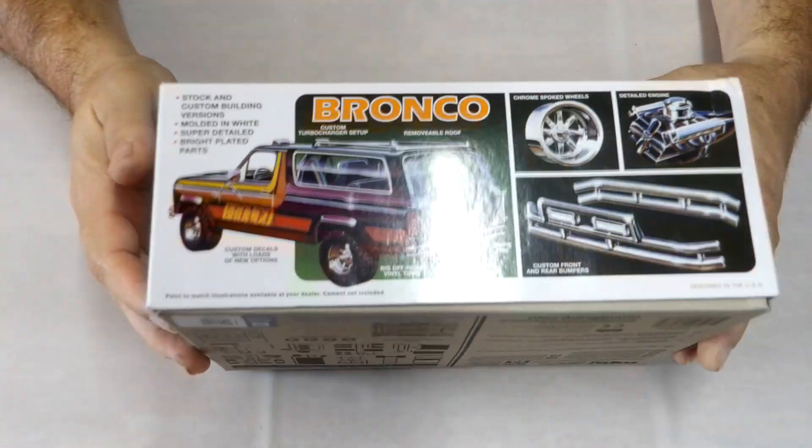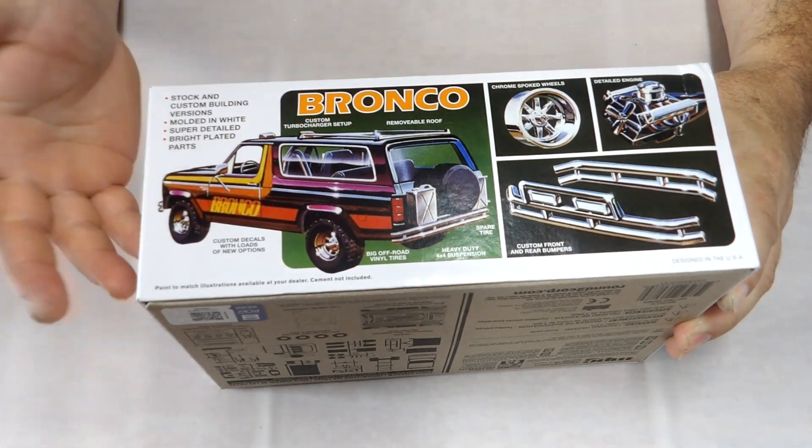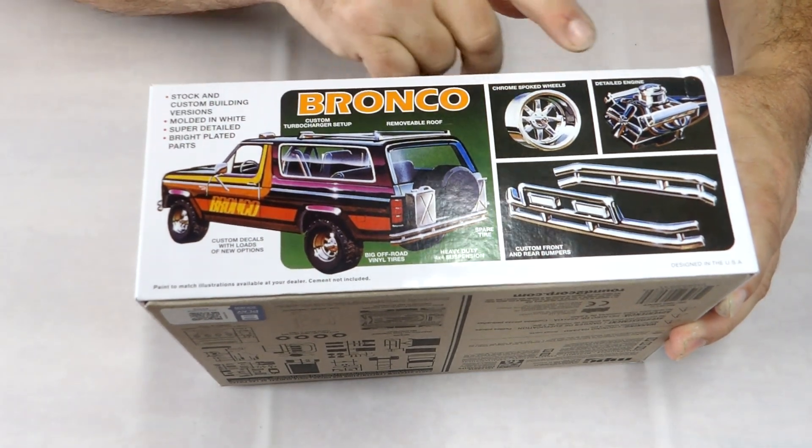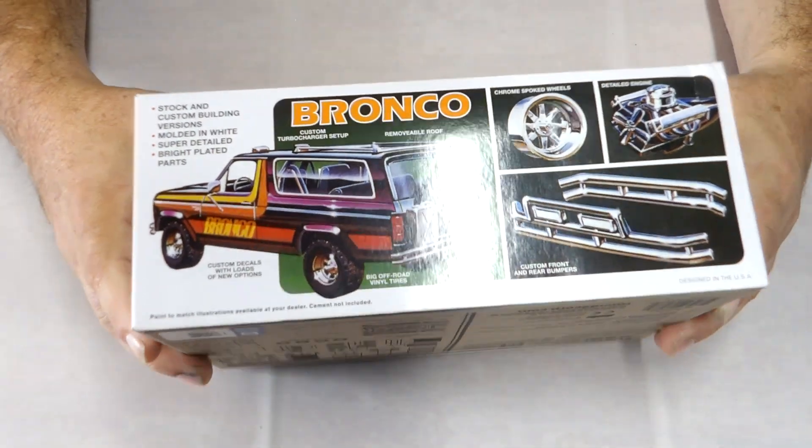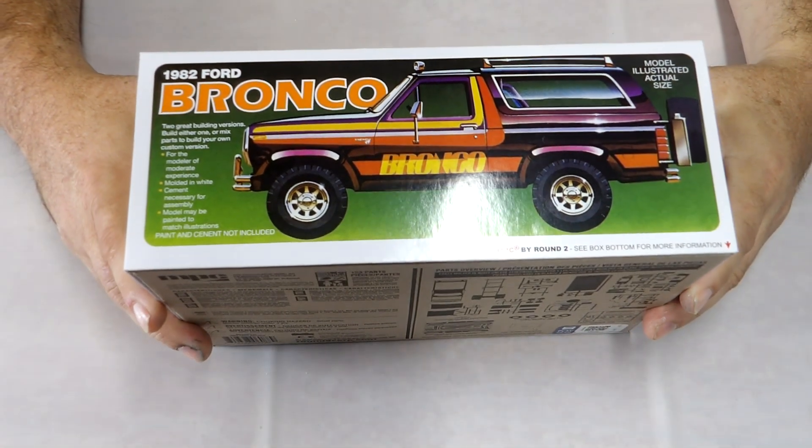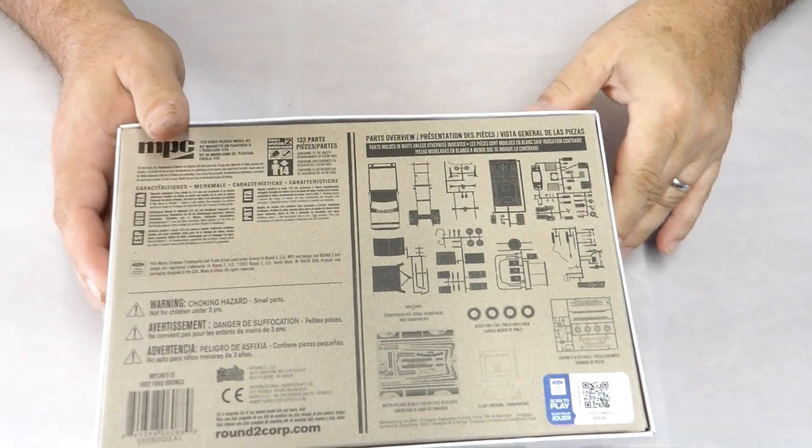On the side you get the illustration of it, the wheels, the engine, the front bumpers. It's got the actual size of the vehicle so you know how big it is. On the bottom we've got everything that's in the kit.